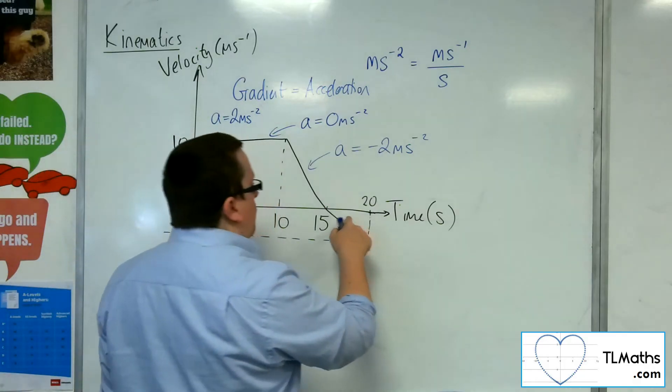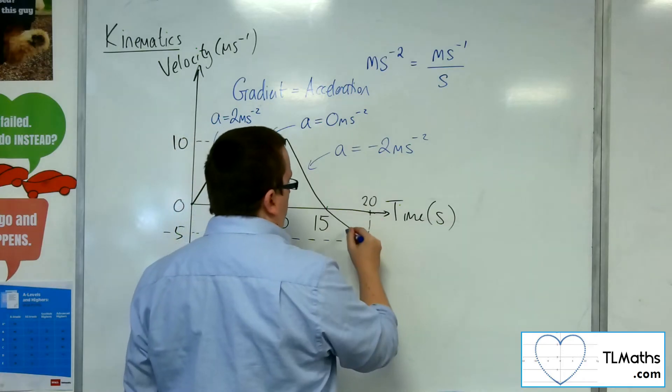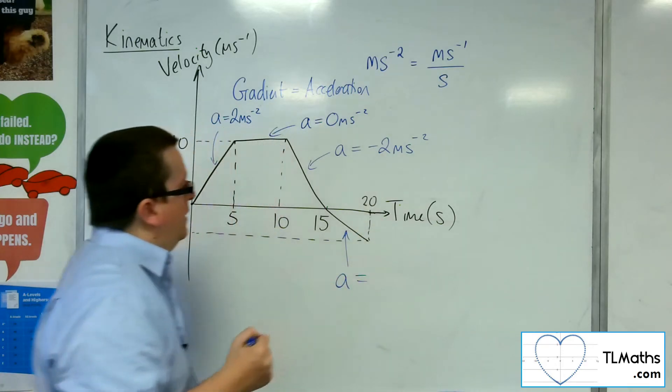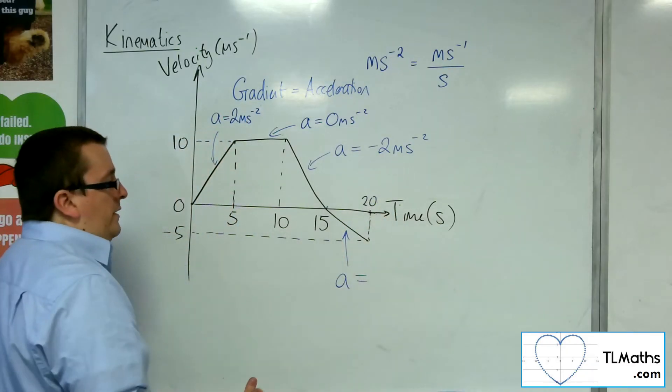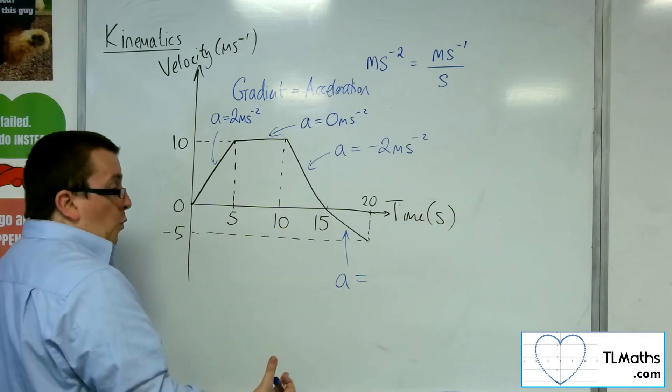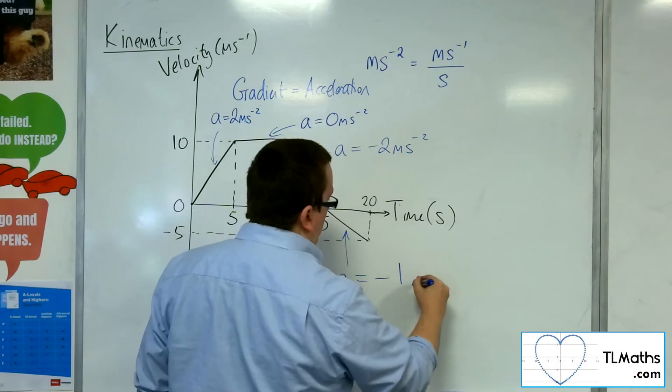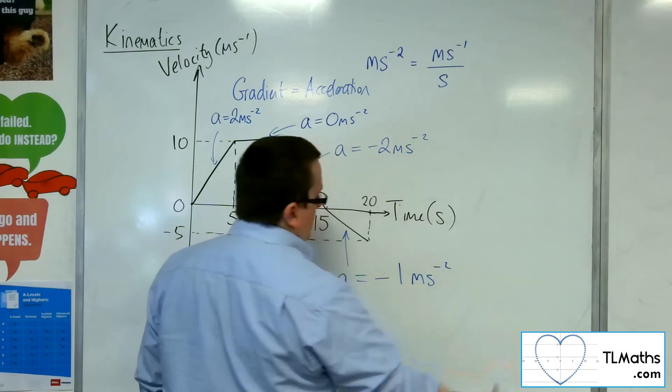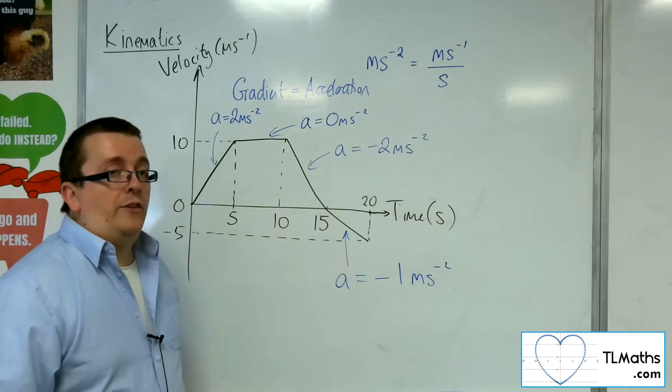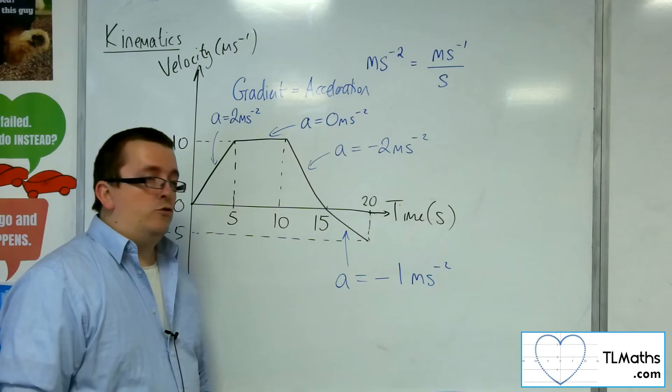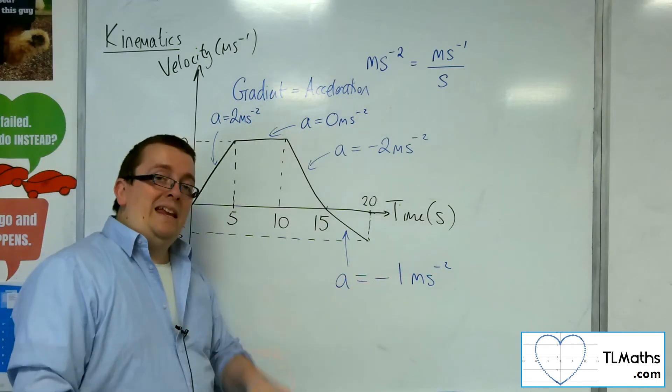Whereas here, when I find the acceleration of this part of the graph, the final five seconds, then I am doing the difference in the y, which is 5, divided by difference in the x, which is 5. So 1 is going downwards, so it's minus 1. So minus 1 metres per second per second. Now here, what that is representing, because the velocity is going in the negative direction, that means that I am accelerating in the negative direction.